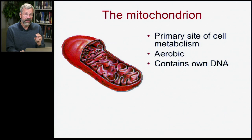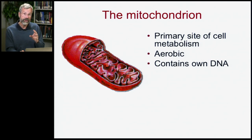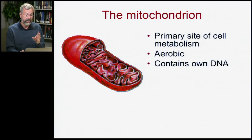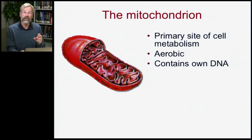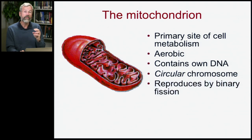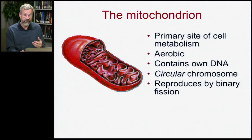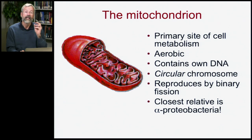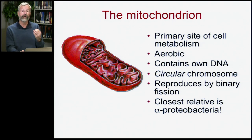The mitochondria contains its own DNA — a circular chromosome — and it reproduces by binary fission, actually reproducing inside the eukaryotic cell. Having its own DNA, a circular chromosome, and reproducing by binary fission, it's not surprising to realize that mitochondria are actually closely related to what were once free-living bacteria.